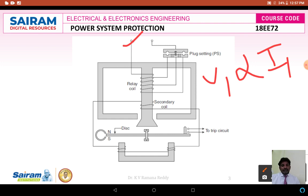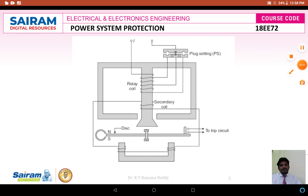When the actuating quantity I1 — the fault current — flows through the relay coil or primary coil, it links to the secondary coil wound on the same center limb of the core of the transformer. Then the secondary voltage V2 is induced in the secondary coil. This secondary voltage V2 causes a current I2 to flow in the secondary winding, which produces a flux Φ2. The interaction of these two fluxes, Φ1 and Φ2, acts on the disc.